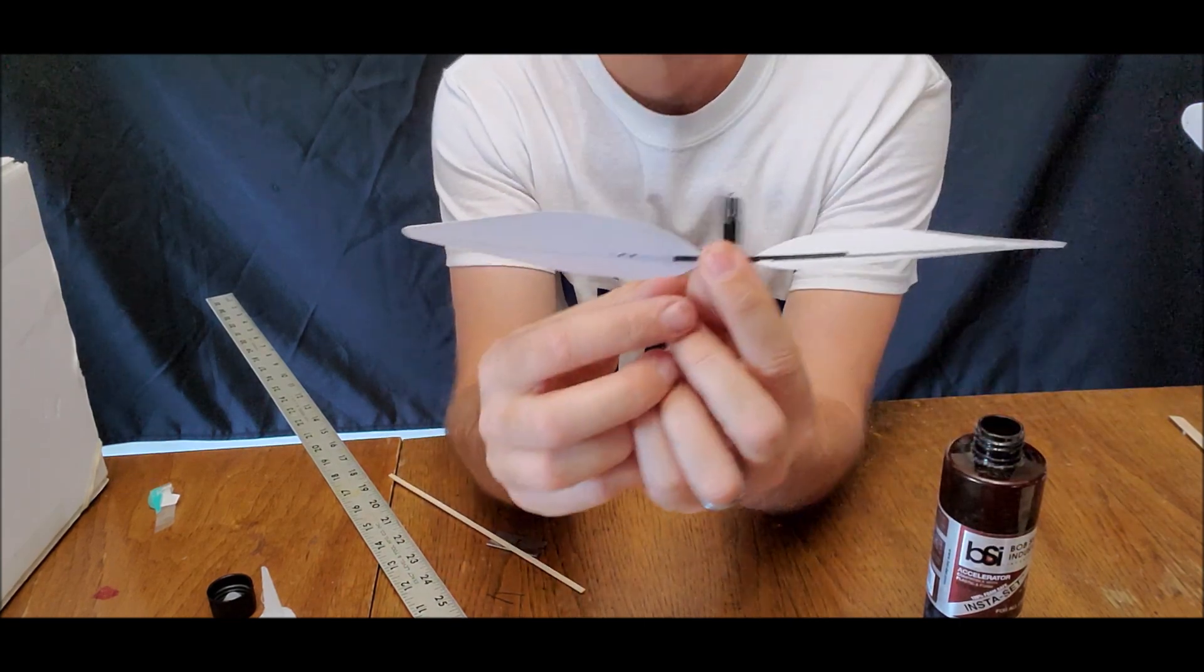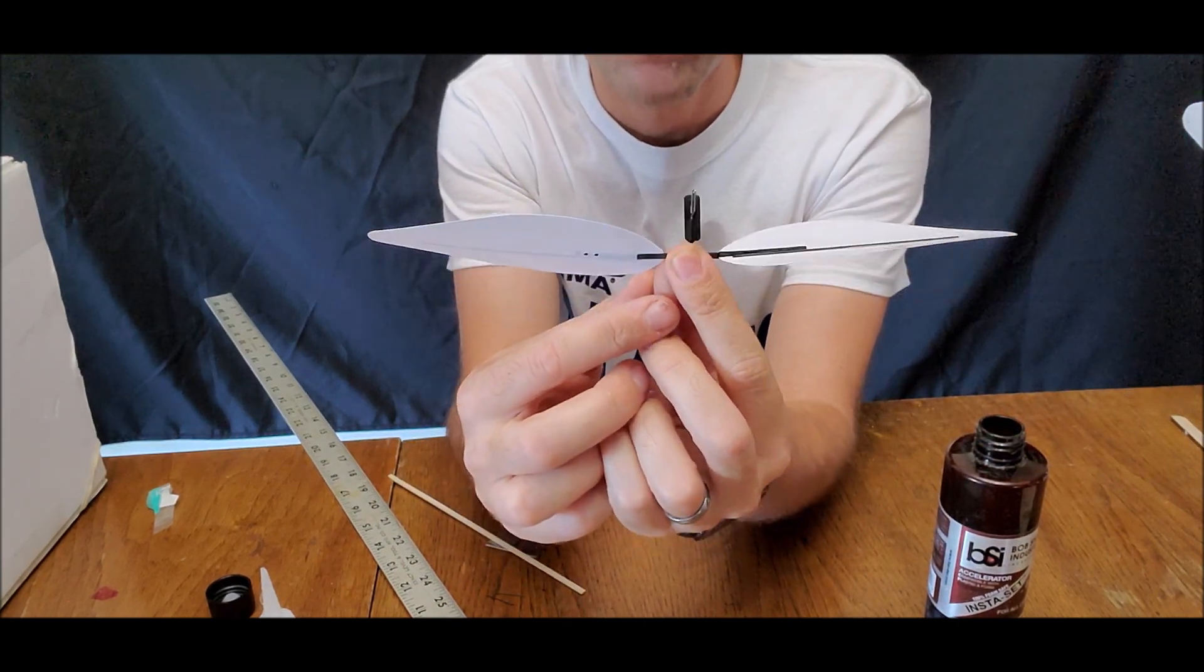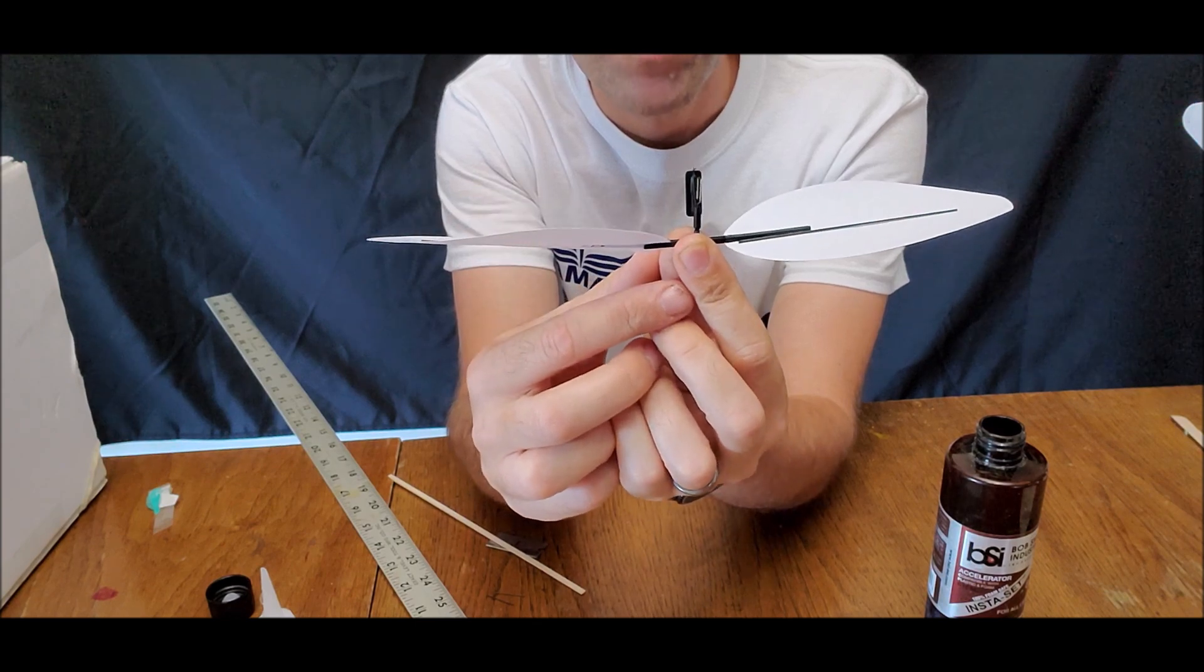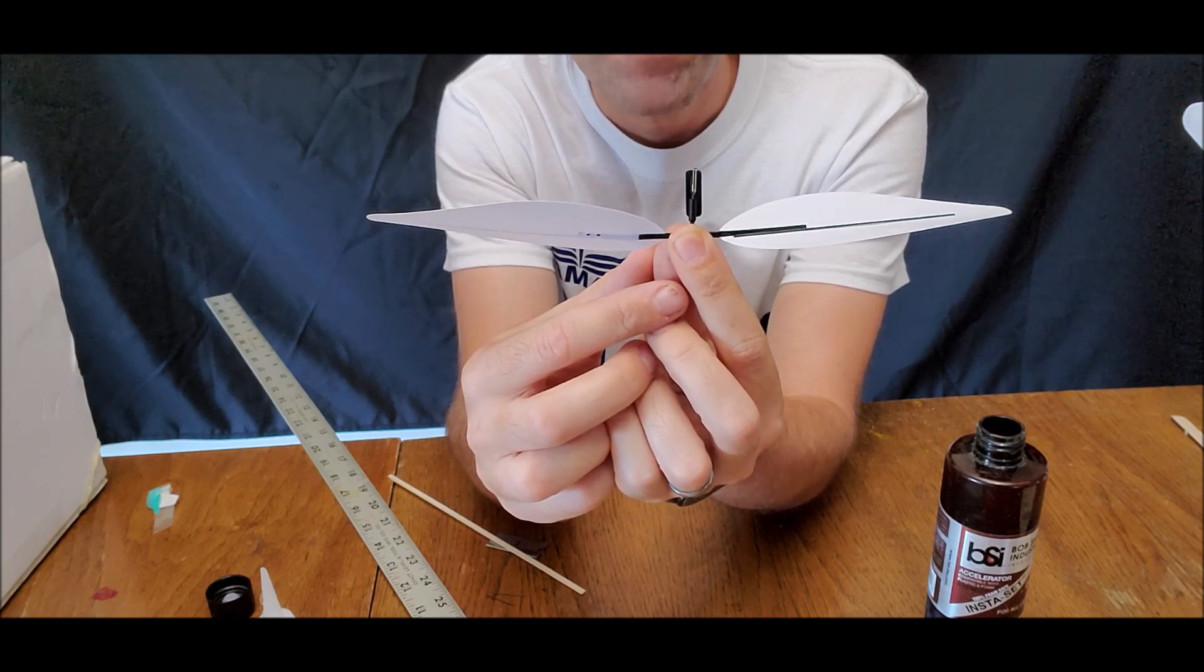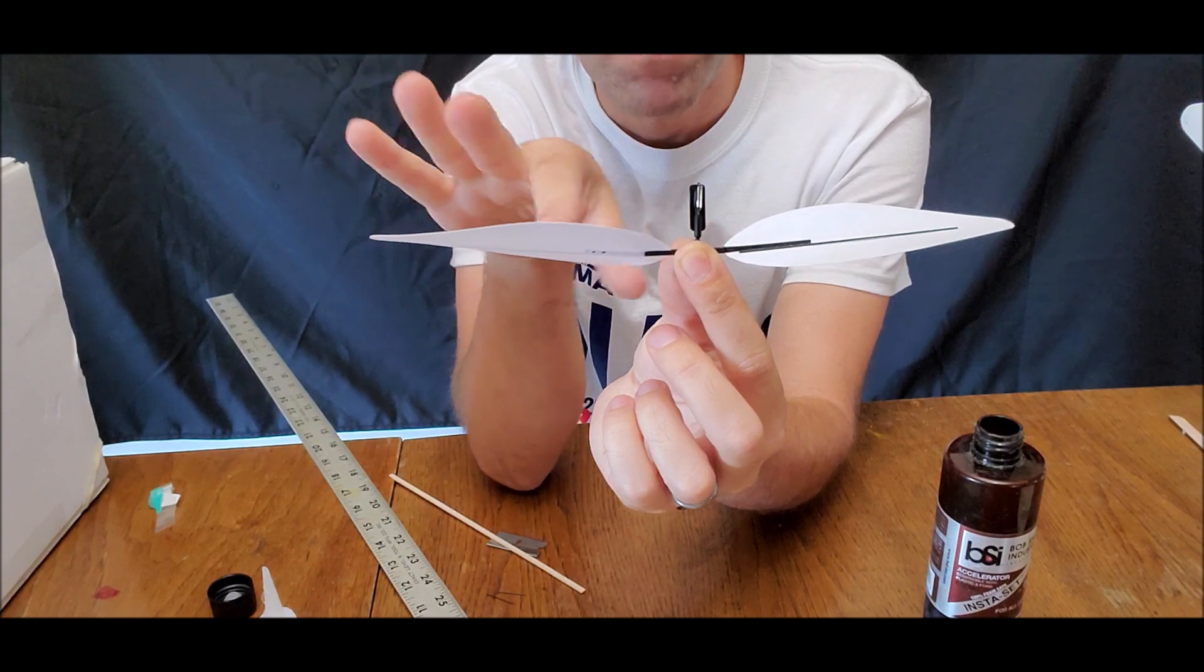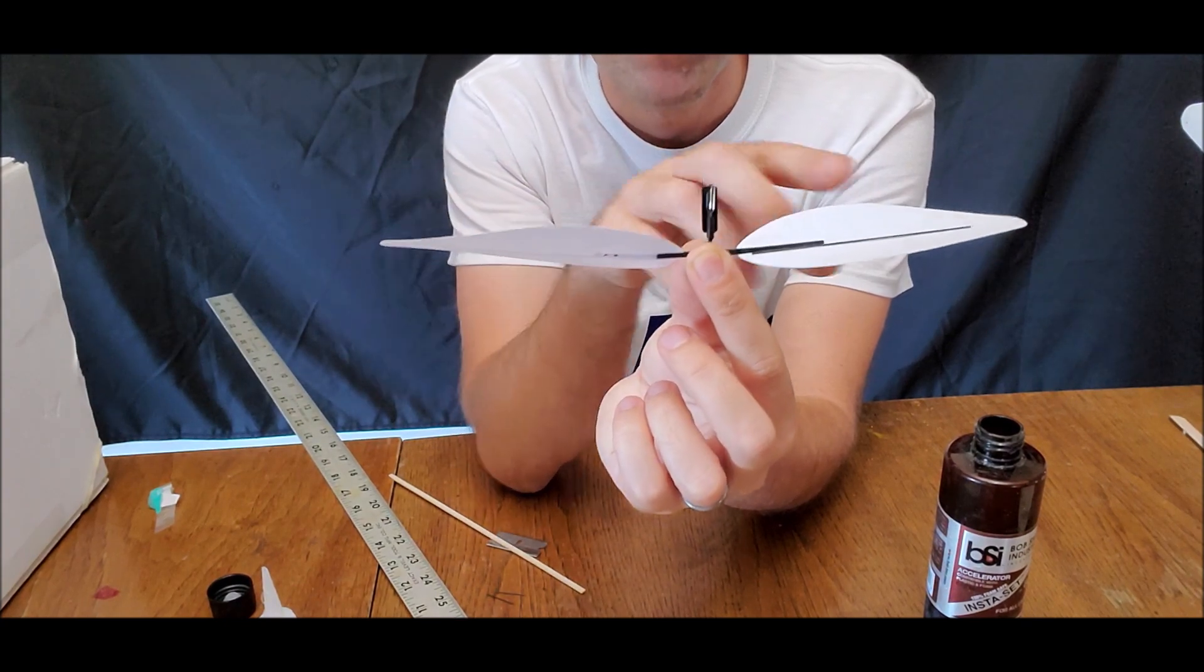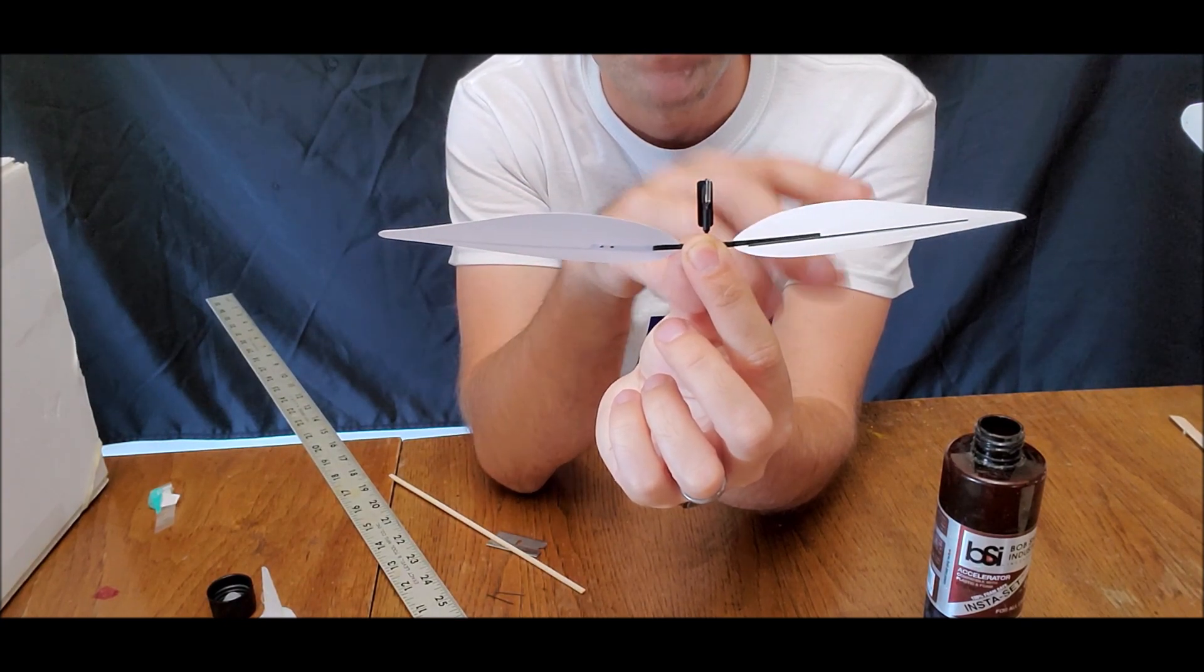And so now if you look from the side profile you can see that both of these blades are swept back a little bit but that they maintain a very similar shape there.